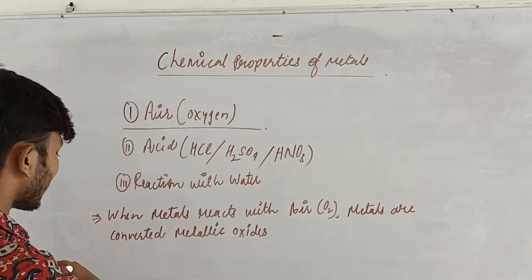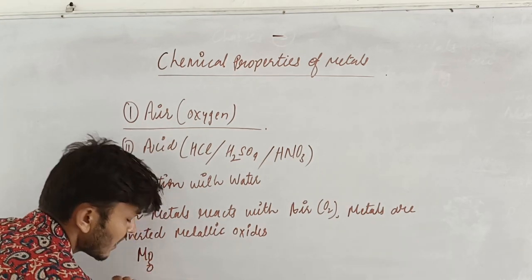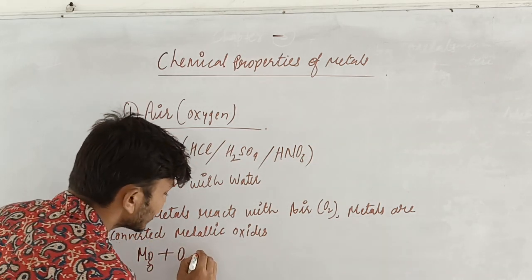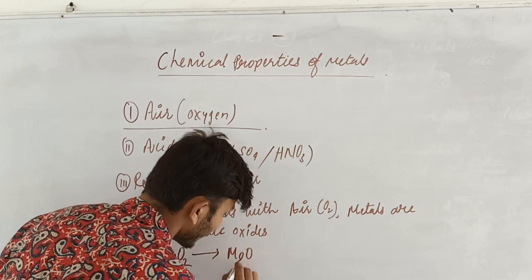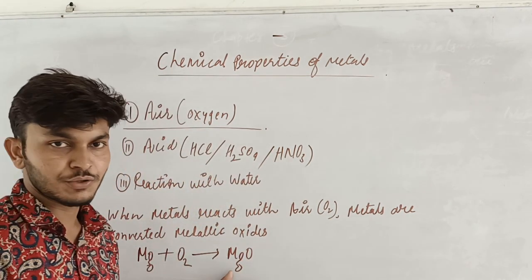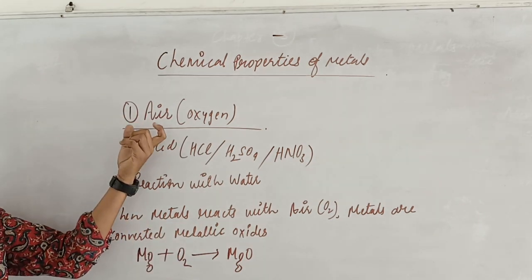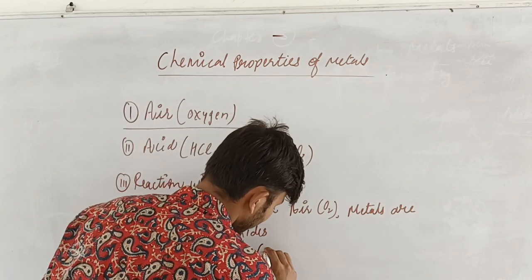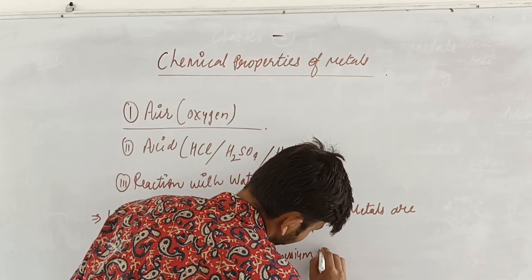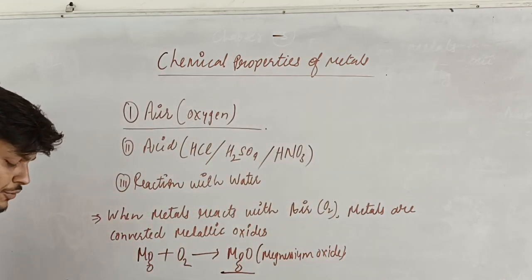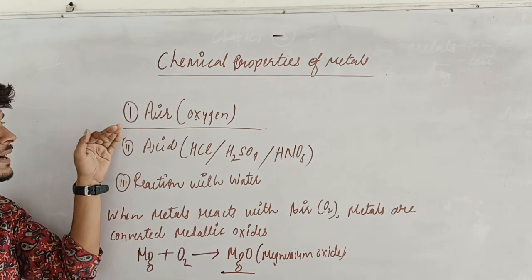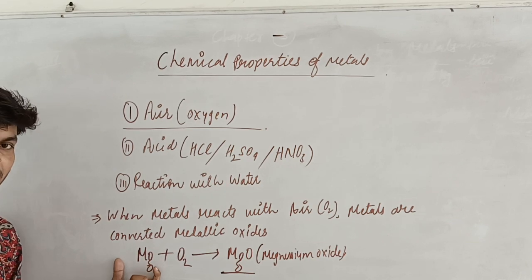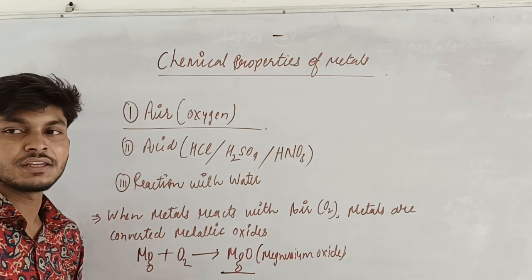For example, if we take magnesium and burn it — meaning magnesium is reacting with oxygen — it converts into magnesium oxide, MgO. So when metals react with oxygen or air, they form metallic oxide. Magnesium and oxygen react with each other forming magnesium oxide.